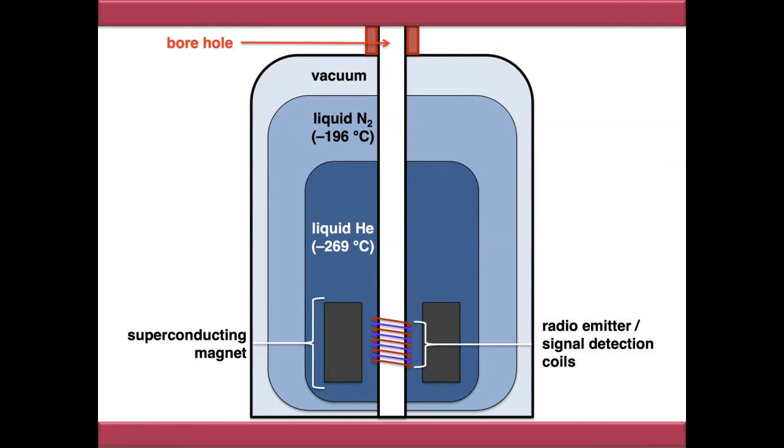So when the instrument loads a sample into the machine it will drop down like this so that the sample is in the middle of these emitter and detection coils in the middle of the magnet.